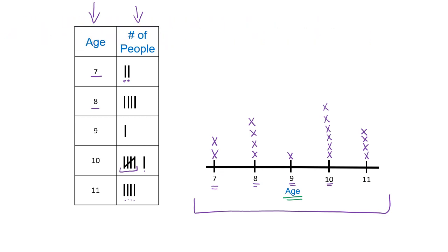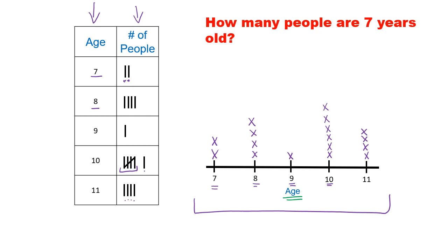Let's look at the next question: how many people are 7 years old? Now, boys and girls, 'how many' means we're looking for quantities or frequencies. So now we look at those X's and see how many times a specific age happens. We're looking at 7 years of age and we want to know how many X's there are for the 7. Well, there's 1, 2. So 2 people are 7 years old.